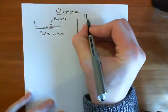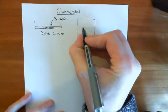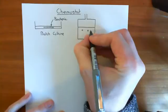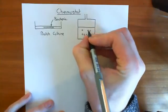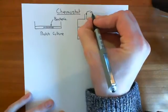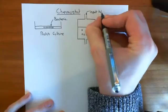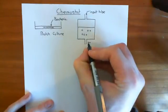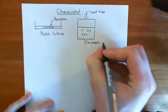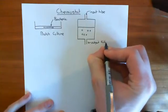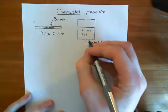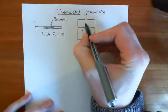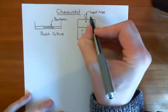What you need to do is produce a vessel like so, which contains a medium full of the nutrients that the bacteria need in order to grow. You put the bacteria in this medium, and then you need to have an input tube where you can inject in fresh medium with fresh nutrients. You also need an output tube where you can remove the stale medium — that is, remove all the waste products that these bacteria are producing. So the output tube removes the waste, and the input tube brings in new medium with fresh nutrients.